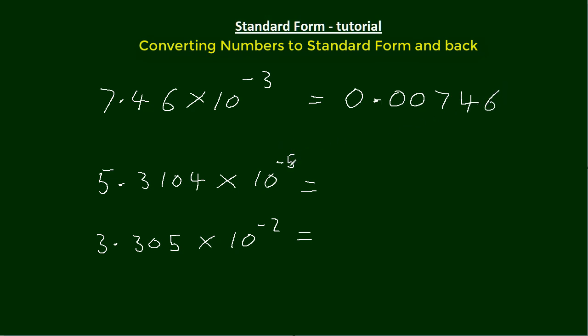Let's see if we can do this one. This one's a 5 there. So the 5 here is going to be the fifth number after the decimal point. 1, 2, 3, 4. We pop the 5 in. And then we need all these numbers here just as they are. 3, 1, 0, 4.